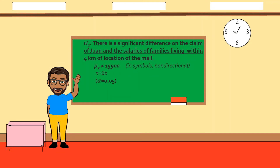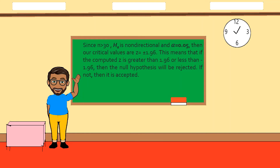Our alternative hypothesis is: there is a significant difference between the claim and the salaries of families living within four kilometers of the mall location. In symbols, the hypothesized mean is not equal to fifteen thousand nine hundred, meaning it is non-directional. Our sample size is 60, which is greater than 30, and our level of significance is alpha equals 0.05. Since the sample size is greater than 30 and the alternative hypothesis is non-directional, our critical values are z equals positive and negative 1.96. This means that if the computed z is greater than 1.96 or less than negative 1.96, the null hypothesis will be rejected; otherwise it is accepted. This is our rejection region.